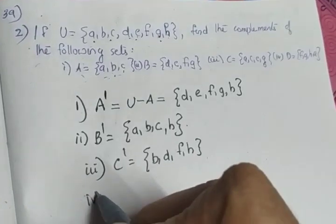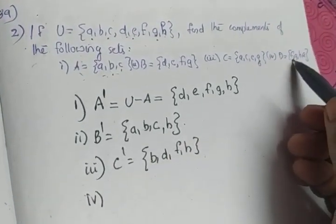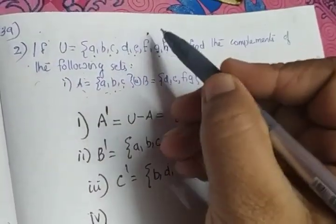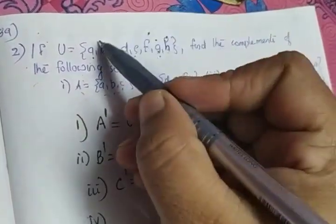And the last part, fourth part: D is given as {f, g, h, a}, and from this we have to subtract all those elements from U. So f, g, h, a.